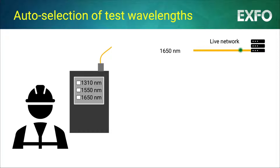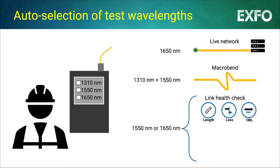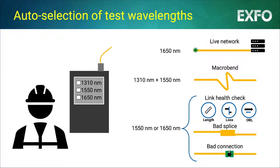Such as 1650 for testing out of band on a live network, or combining 1310 and 1550 to clearly identify a macro bend, while 1550 or 1650 alone is enough for a link health check in identifying bad splices or connectors.